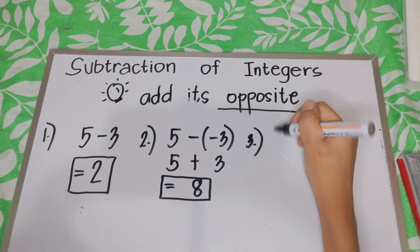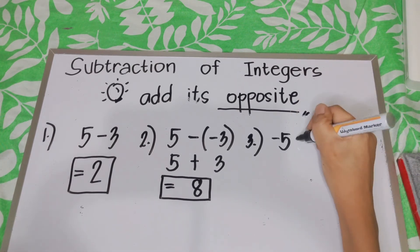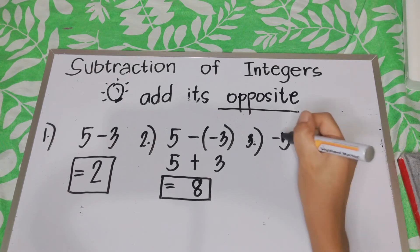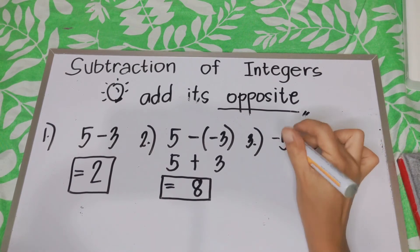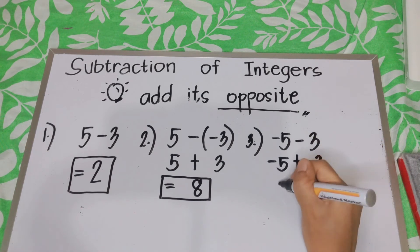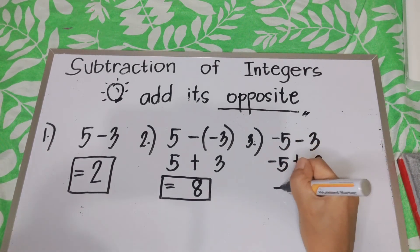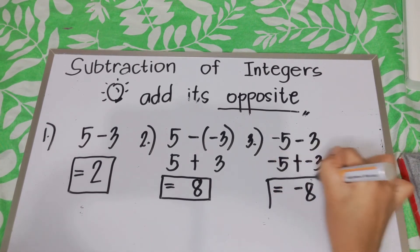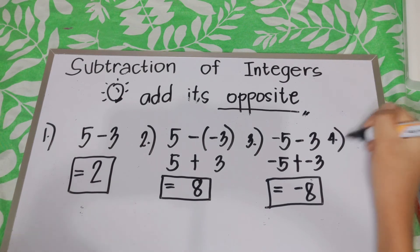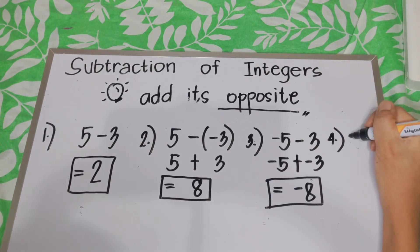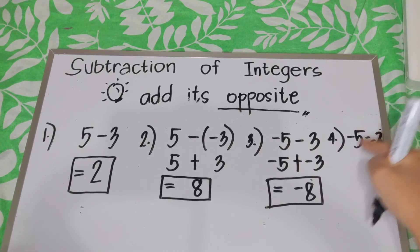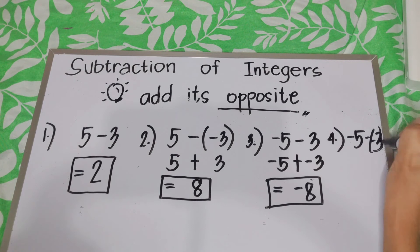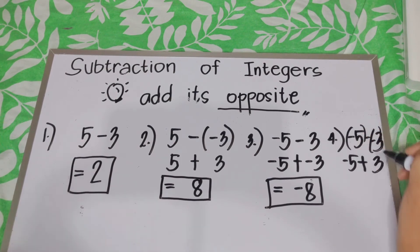Next: if we have negative 5 minus 3, then 3 is positive so it becomes negative 3. We're going to add. This will remain negative 5. Since they are both negative, the answer is negative 8. And then we have negative 5 minus negative 3. The opposite of negative 3 is positive 3, so we're going to add it to negative 5.